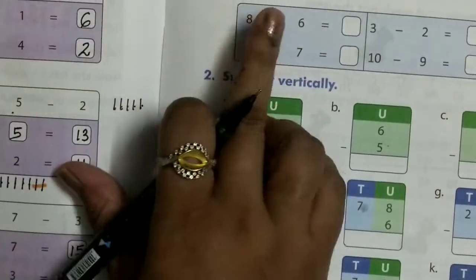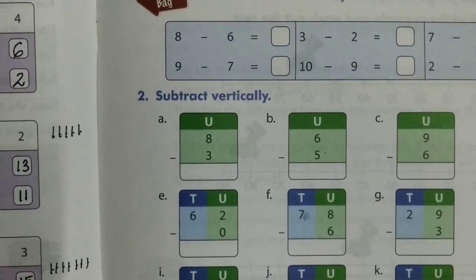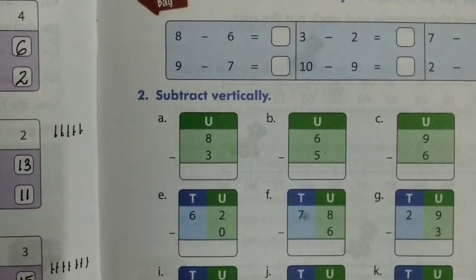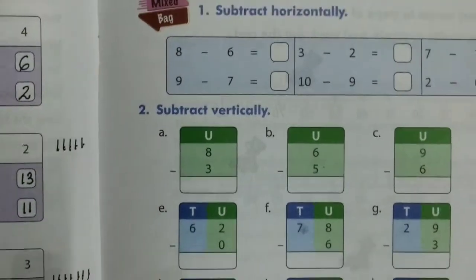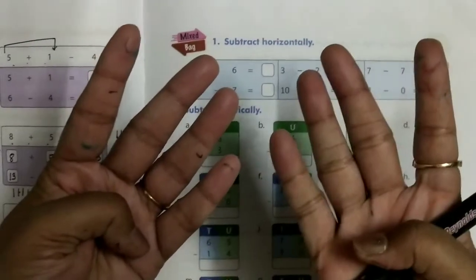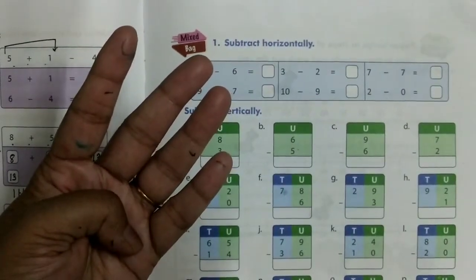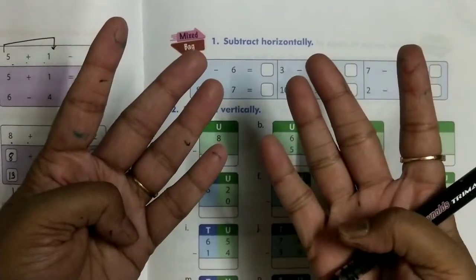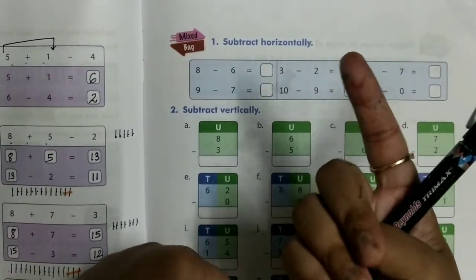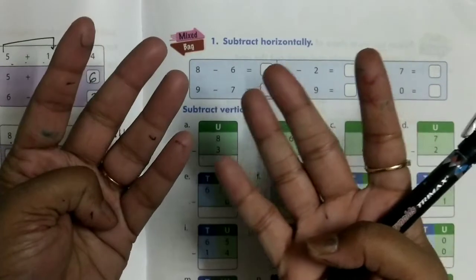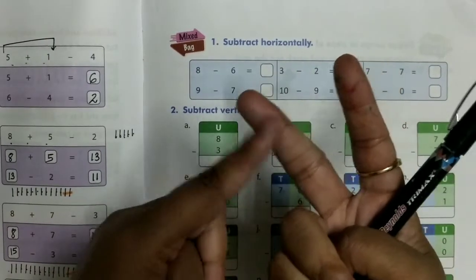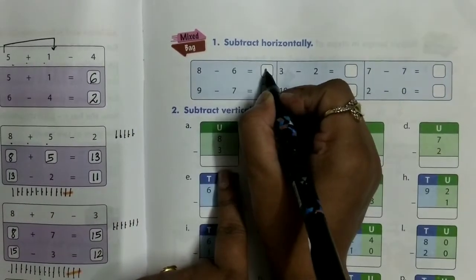Now subtract horizontally. The meaning of horizontally means you do it directly. 8 minus 6 — take your 8 fingers. Here we have 8 fingers — 4 plus 4 is 8 — and take away 6: 1, 2, 3, 4, 5, 6. How many fingers are remaining? 2. So 8 minus 6 equals 2.